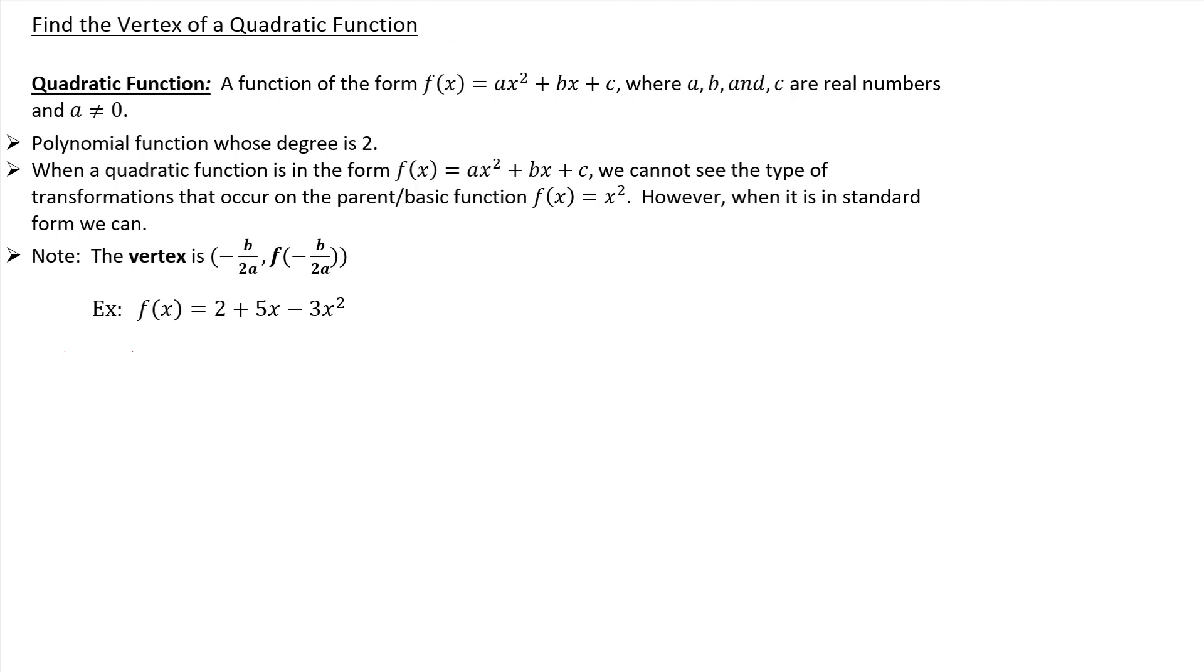When we're in the form f of x equals ax squared plus bx plus c, we cannot see all the transformations that occurred on the parent function f of x equals x squared. That means that the vertex is not obvious to us. Whereas if we were in standard form, it would be more visible and we could go straight to what the vertex is.